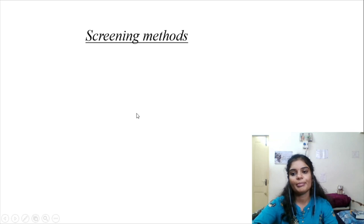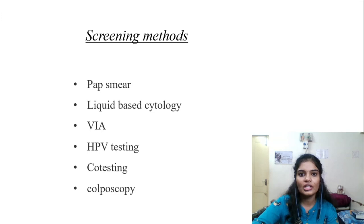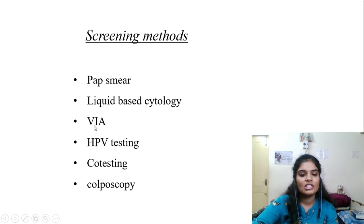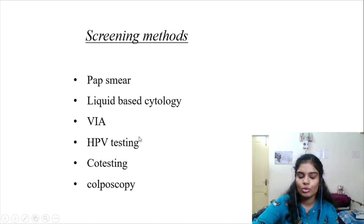Other screening methods for CA cervix include: liquid-based cytology, VIA (visual inspection with acetic acid), HPV (human papillomavirus) testing, co-testing (both HPV and cytology), and colposcopy or colposcopic-guided biopsy.